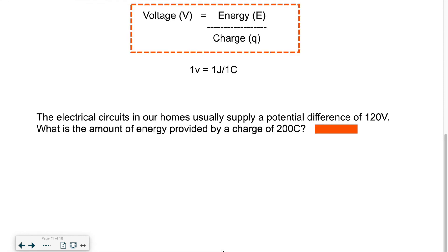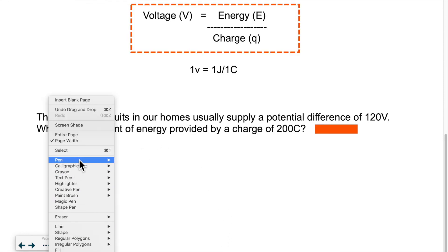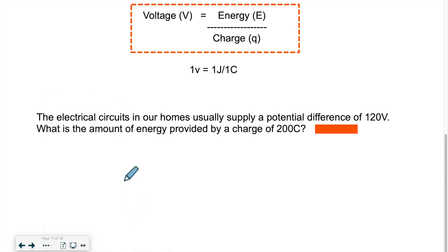What kind of problem could we have? The electrical circuits in our homes usually supply a potential difference of 120 volts. So V is equal to 120 with small v. What is the amount of energy? So I'm looking for E. What is the amount of energy provided by a charge of 200 Coulomb?